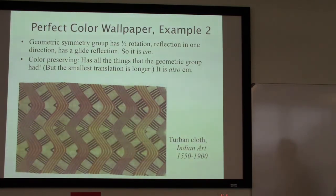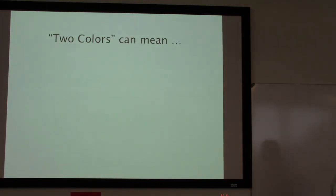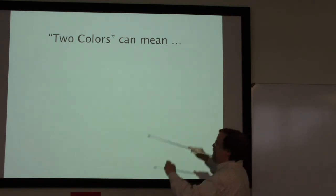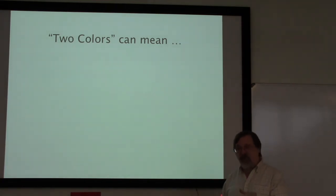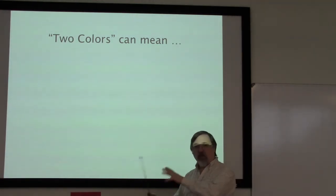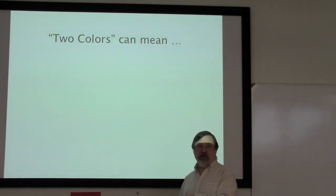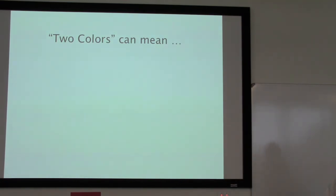I've been talking about two-color symmetries, and most of the time that means exactly two colors. But occasionally it can be useful to think of two colors in a more general sense — putting quotes around the word 'colors.' There can be times when there are two things in the design which the artist meant to be fairly similar: instead of red and blue, it might be one kind of flower and a different kind of flower, one kind of person and a different kind of person. So 'two colors' can in some cases mean two similar shapes.